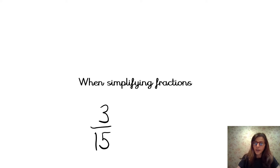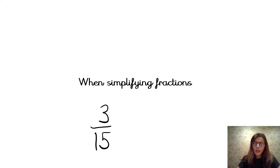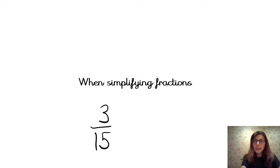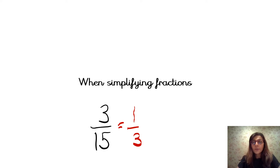So we looked at factors when we were simplifying fractions. Let's have a look at the fraction 3 fifteenths. If I was going to simplify it, the first question I would ask myself is what is 3 divisible by and what is 15 divisible by? And it has to be the same number. So what goes into 3 and what goes into 15? 1 goes into 3, but is that the highest one? Let's try 2 — no, because they're both odd numbers. 3 — yes, 3 can be divided by 3 and 15 can be divided by 3. So 3 divided by 3 equals 1, and 15 divided by 3 equals 5. So to simplify, I have got 1 third. 3 fifteenths equals 1 third in its lowest term, and the factor was 3.